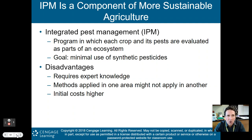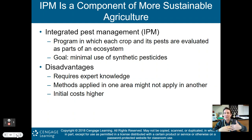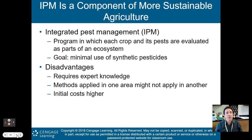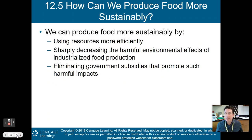IPM, integrated pest management, is a component of more sustainable agriculture. This is a program in which each crop and its pests are evaluated as parts of an ecosystem. The goal is to minimize the use of synthetic pesticides — you only use them when absolutely necessary. The rest of the time, you use natural predators or natural ecological services to reduce pests on your crops. Some disadvantages of IPM: you need expert knowledge and must educate farmers; methods applied in one area may not work in another, unlike synthetic pesticides which work everywhere; and initial capital costs are higher. But down the road you make up that money by not buying synthetic pesticides.